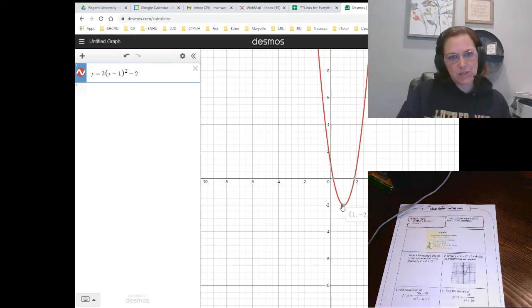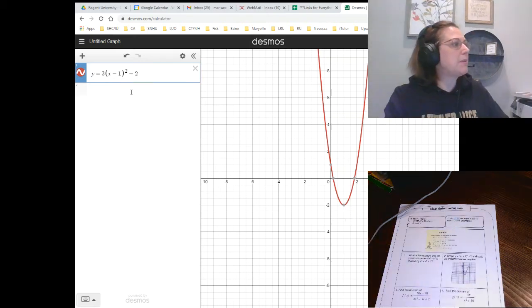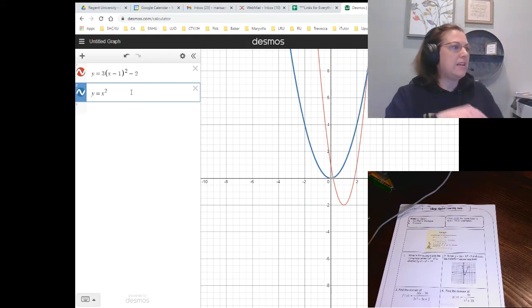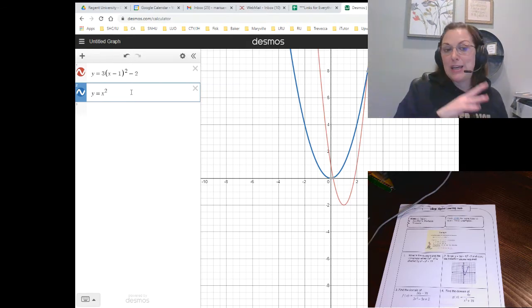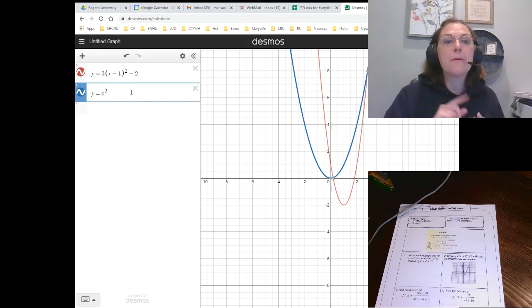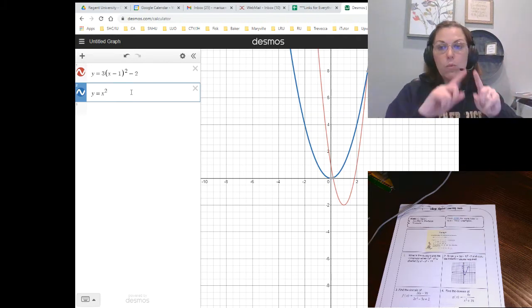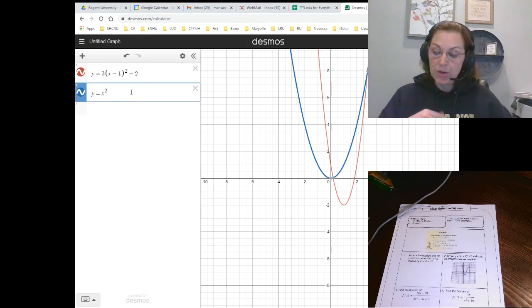Now, it's asking to state the transformations. So let's put the parent function, the normal graph of y equals x to the second. And what we're asking ourselves is here's the regular graph in the blue that you see from Desmos. What did we do to get to the red? Let me say that again. You look at the blue one. That's the normal graph. What did we do to it to get to the red?